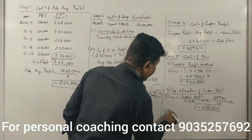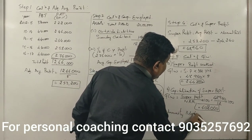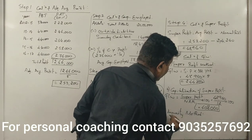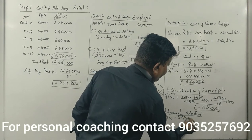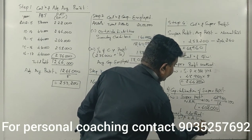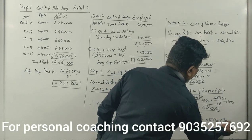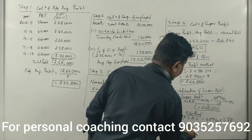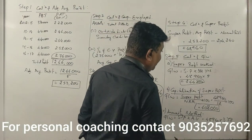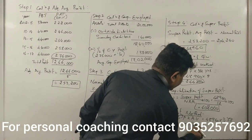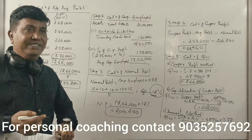Method 3 — Annuity method: Goodwill equals super profit into annuity value = 48,960 × 3.78 = 1,85,068.80.